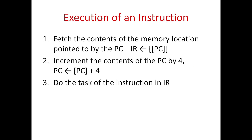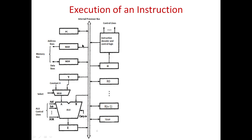We will now execute the basic steps. The first step is fetching — fetch the content of the memory location pointed to by the PC. The second step is to increment the PC. This happens in parallel with fetching; the PC value increments by 4. Then we decode and perform the task of the instruction in the IR. If we read the instruction in the IR, we identify the task — for example, add — and perform it. This is the basic instruction execution.